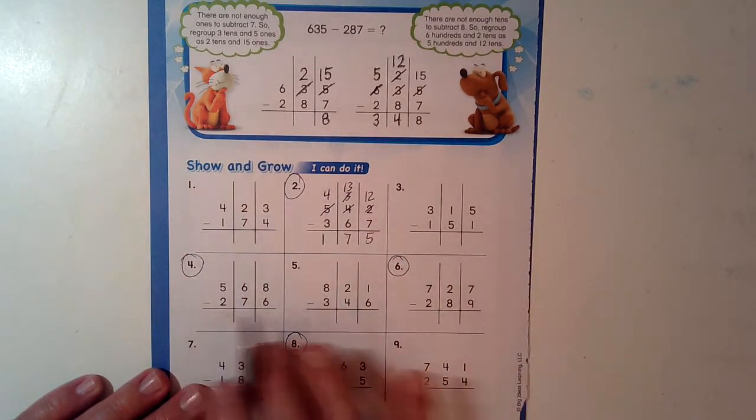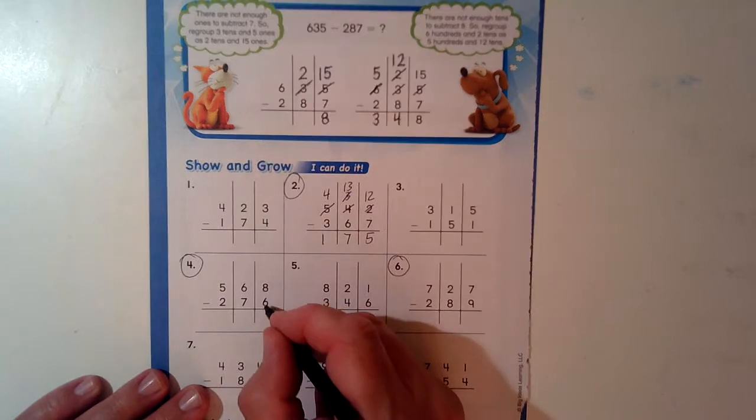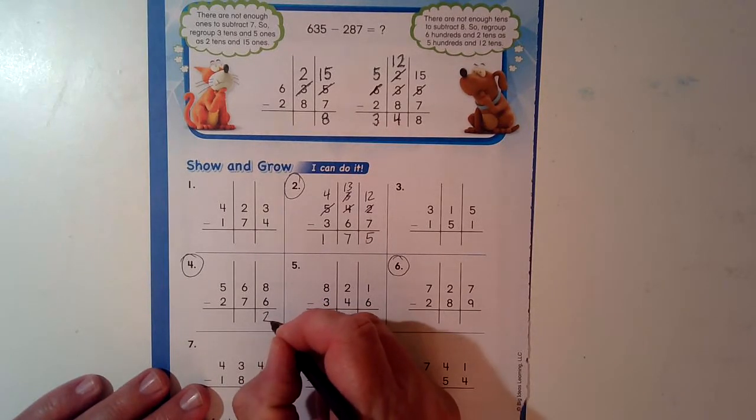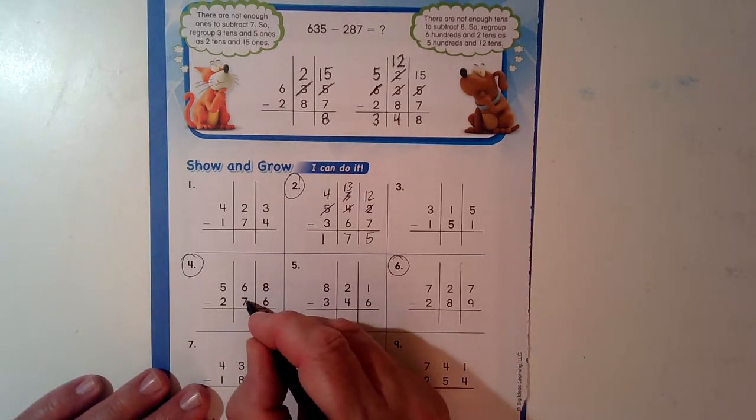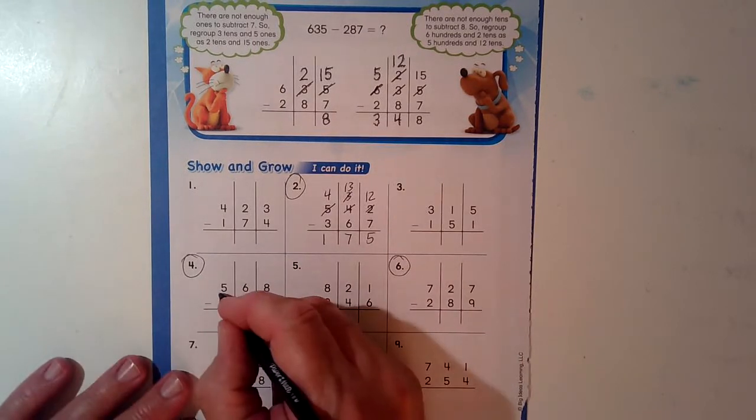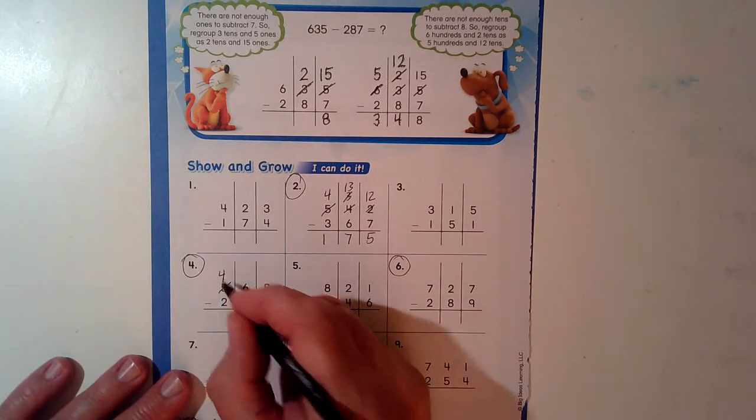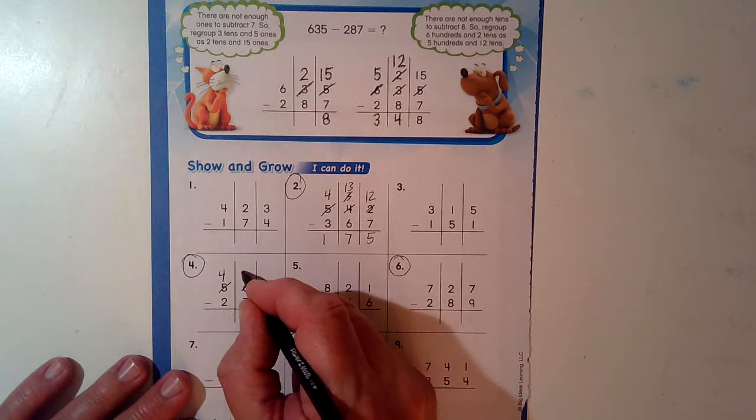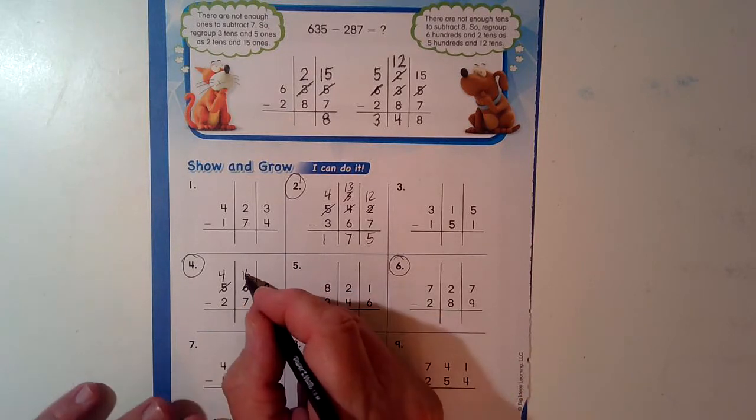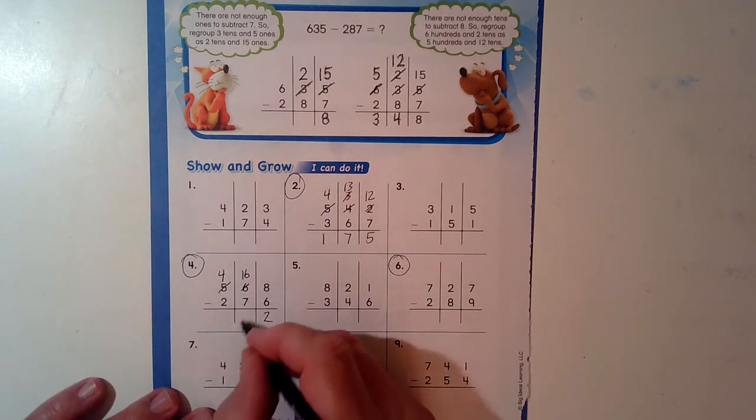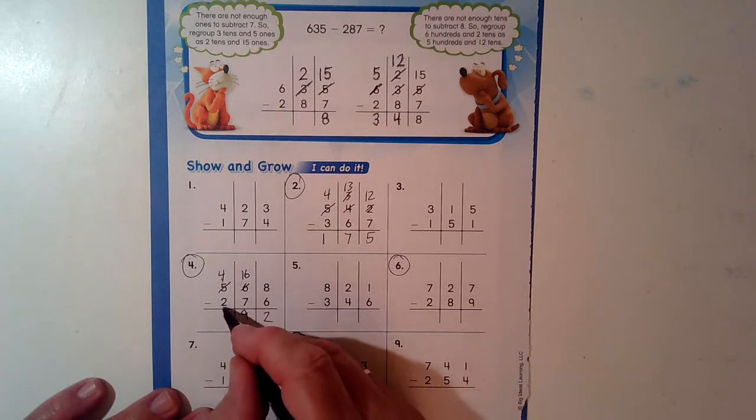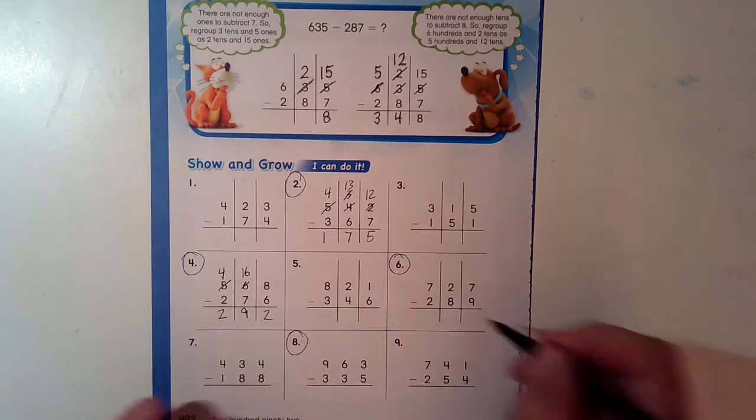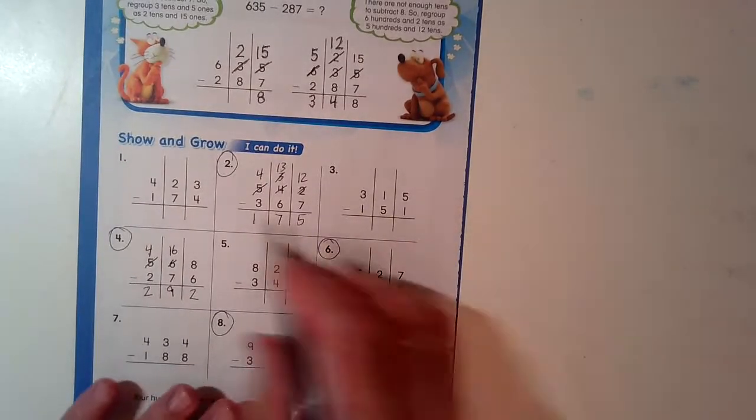Next, I said only the even ones. Okay, 8 taking away 6, I can do that. 6 taking away 7, I can't do that. Take this. Now it's a 4. This is not 6, it's 16. 16 minus 7 is 9. 4 minus 2 is 2. Even: 6, 2, 4, 6.